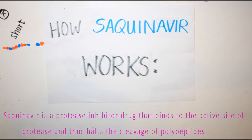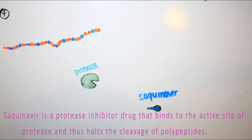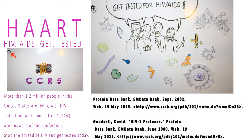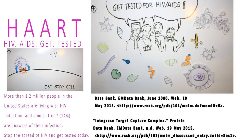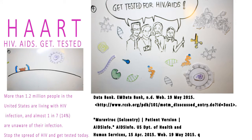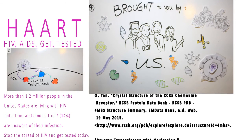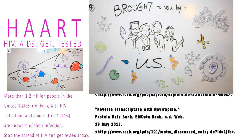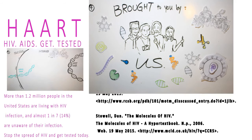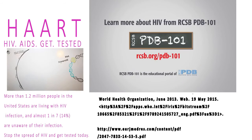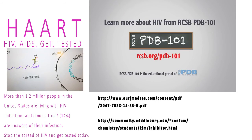Saquinavir is a protease inhibitor drug that binds to the active site of protease and thus halts the cleavage of polypeptides. More than 1.2 million people in the United States are living with an HIV infection, and almost 1 in 7 are unaware of their infection. Stop the spread of HIV and get tested today.